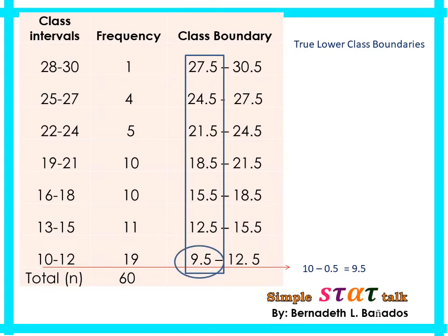For the next true lower class boundary, we will be using the second lower limit which is 13. 13 minus 0.5 equals 12.5. For the remaining 5 true lower class boundaries, you have to solve them based on our illustration and then check if your obtained values are the same as the values posted here.